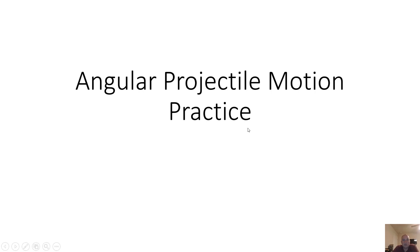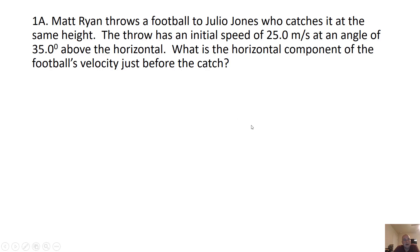In this section, I'm going to go through some angular projectile motion problems in a practice section I have in a worksheet that some of you might have. First one: Matt Ryan's throwing a football to Julio Jones. He throws it with an initial speed of 25 meters per second at an angle of 35 degrees above the horizontal. This question asks for the horizontal component of the football's velocity.